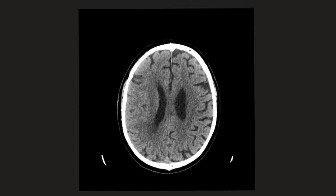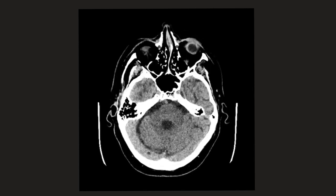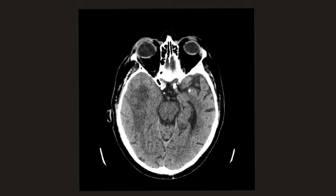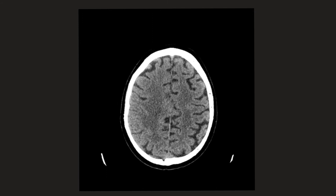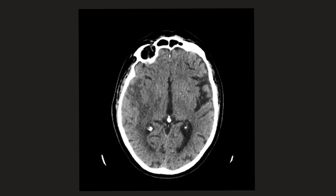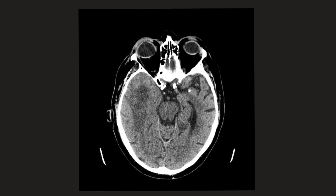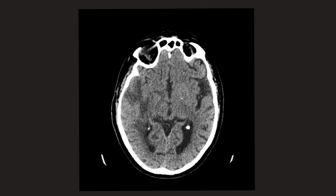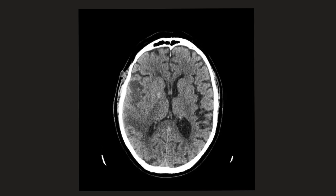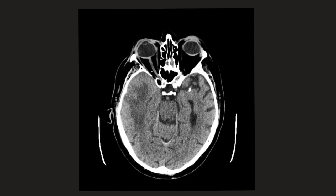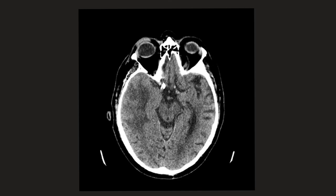Looking at the second case, we can see that in the region of the right temporal lobe and frontoparietal lobes, there is abnormal low attenuation. Again, this is a type of cerebral oedema, but in contrast to the previous case in which we saw a wedge shape, this is very finger-like. And this is in keeping with vasogenic oedema, seen in the context of a space-occupying lesion.